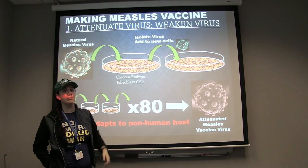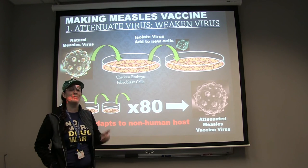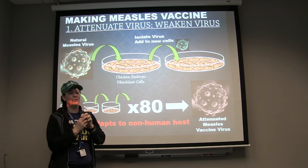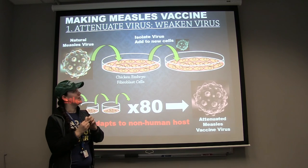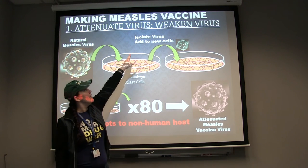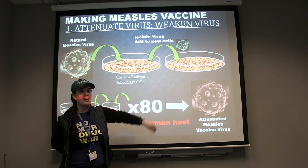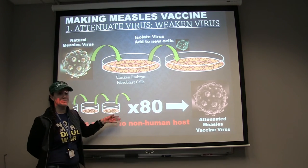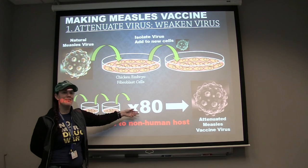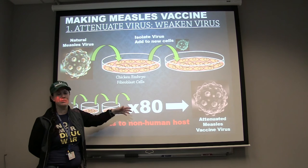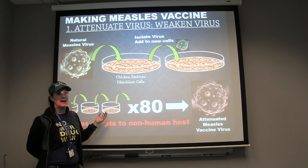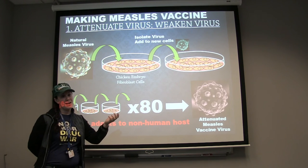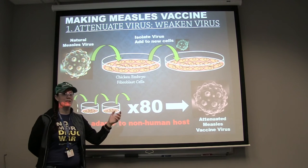Over time we let the virus grow in the chicken cells. Then at the end of that period, we isolate the virus from the cells — we have a little vial full of our slightly mutated measles virus. We take that vial of virus and infect a new petri dish full of chicken embryo cells. We do this many, many times — around 80 to 100 times — repeatedly isolating the virus and infecting a new dish, over and over.